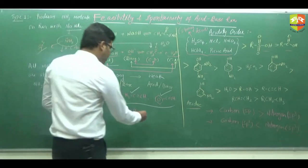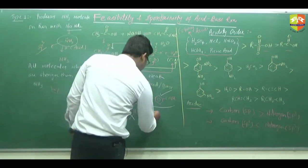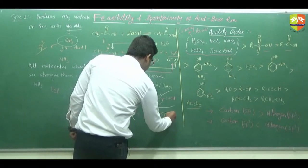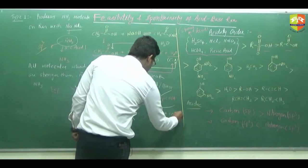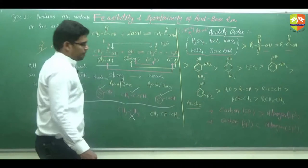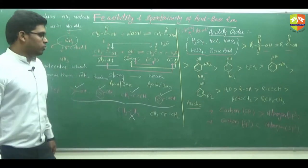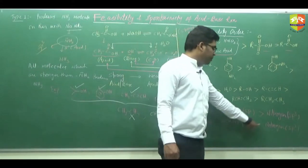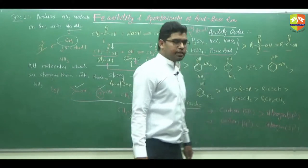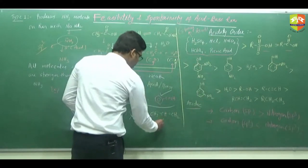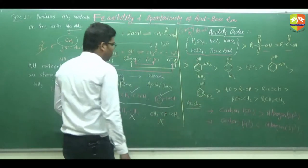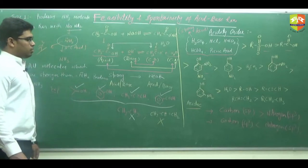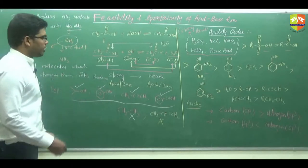If I take an example of alkene also — suppose CH3–CH=CH2 — the carbon atom is SP2-hybridized, and SP2-hybridized carbon is also less acidic than SP3-hybridized nitrogen. So this molecule would also not produce NH3 from this base.